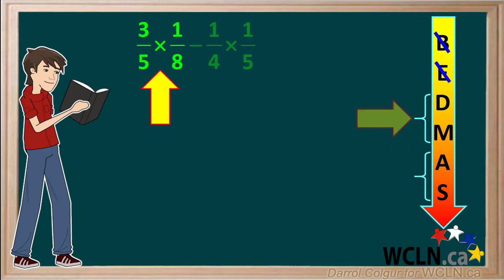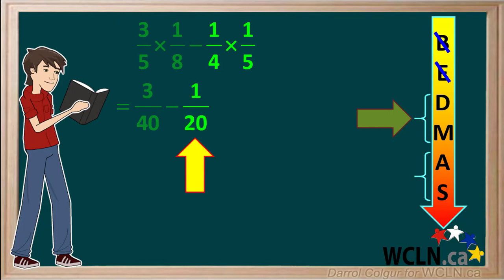Our first multiplication is three-fifths times one-eighth. We cannot simplify the diagonals, so we just multiply these together. Three times one is three, and five times eight is forty. So the product of these is just three-fortieths. Another multiplication in our question is one-quarter times one-fifth. One times one is one, and four times five is twenty. So the product of these is one-twentieth.